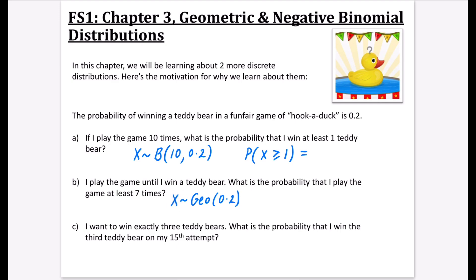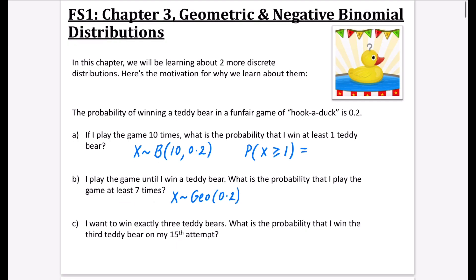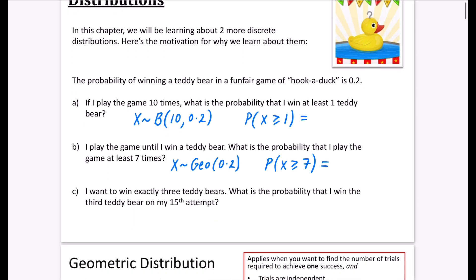This time X is representing something different - it's representing how many trials you need to do the thing. Previously X represented how many successes there are; now X represents how many trials you're going to be doing. The question here is: what is the probability that I play the game at least seven times, i.e. seven times or more?